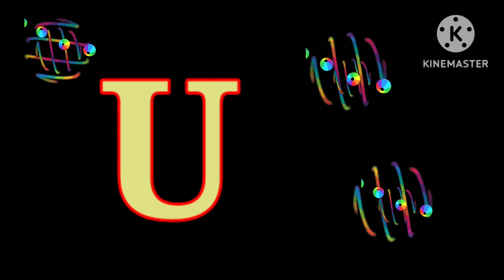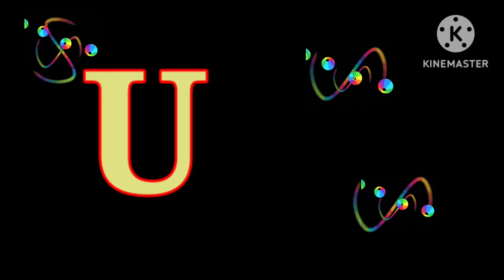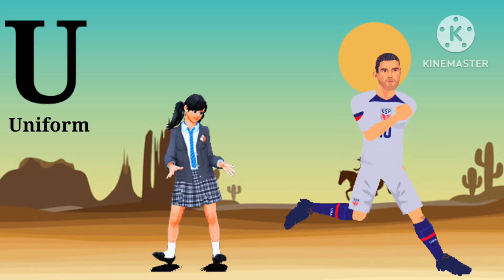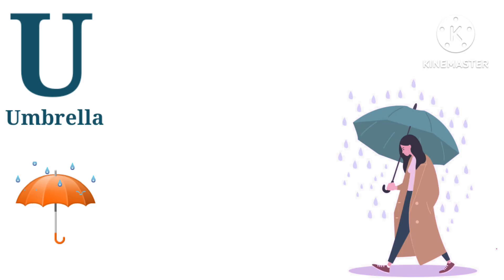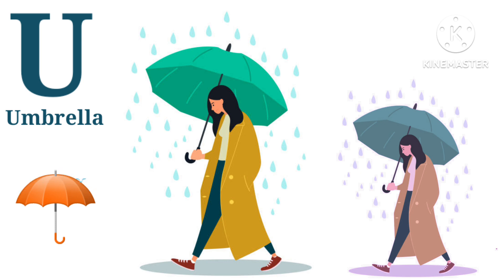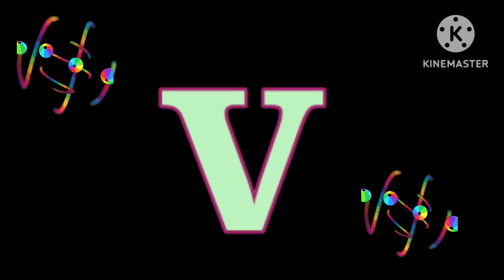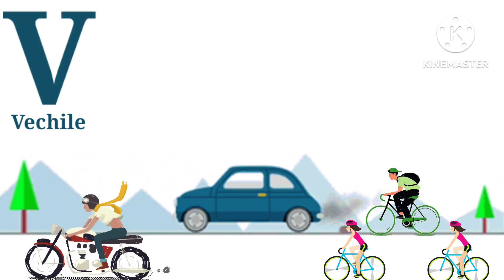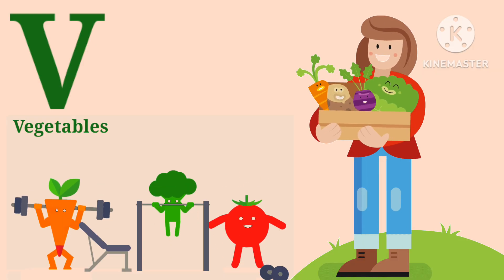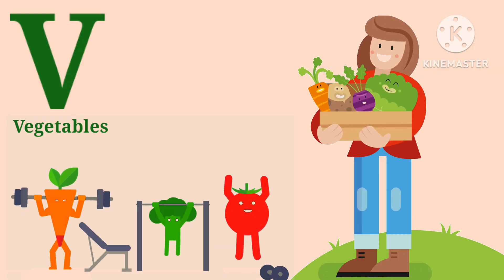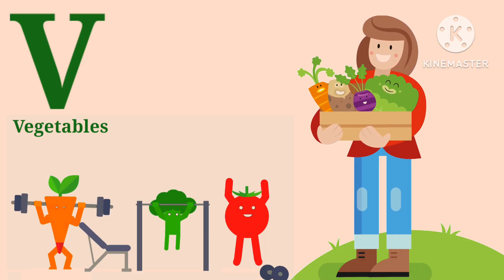U, it's capital U. U for uniform, uniform. U for umbrella, umbrella. V, it's capital V. V for vehicle. V for vegetables, vegetables.